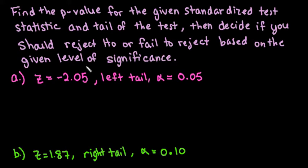For this video, what I want to do is show you how to find a p-value for the given standardized test statistic and the tail of the test. Then we are going to make the decision as to whether we would reject or fail to reject the null hypothesis based on the given level of significance.